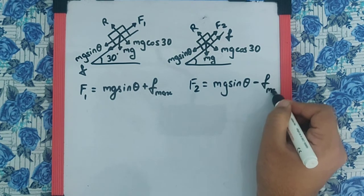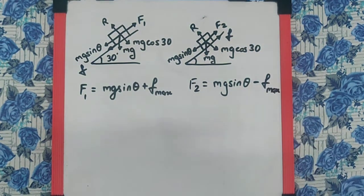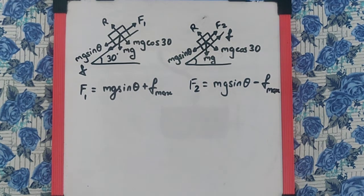the friction, for which we will again take the maximum value. So that is basically the difference in the two cases. And as per the given condition, F₁ is 3 times F₂.